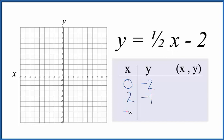And let's just put a negative two in. One half times negative two, that's negative one, and negative two, that gives us a negative three.